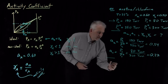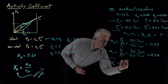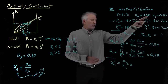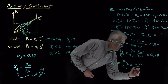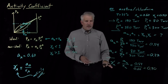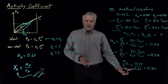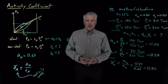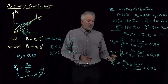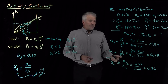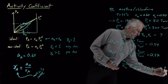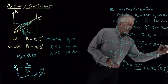Now that we have those activities, we can calculate the activity coefficients. The activity coefficient of acetone is its activity divided by its mole fraction: 0.54 divided by 0.6. That's 0.9 — acetone is only 90% as active as it would be in an ideal solution. So the activity coefficient is 0.9, confirming what we expected about acetone and chloroform: this system exhibits negative deviations from Raoult's Law. The partial pressure is lower than Raoult's Law would predict, and the activity coefficient is less than 1.